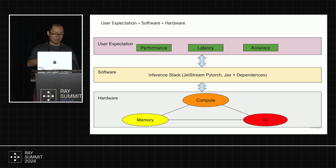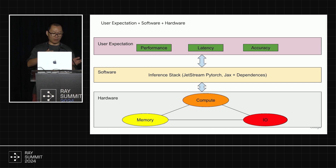What is the user expectation? Users expect high performance, low latency, and high accuracy inference output. And here is where we are located — we are in the software, we are an end-to-end inference stack. We leverage the hardware and output the best performance, low latency, and high accuracy results for our users.